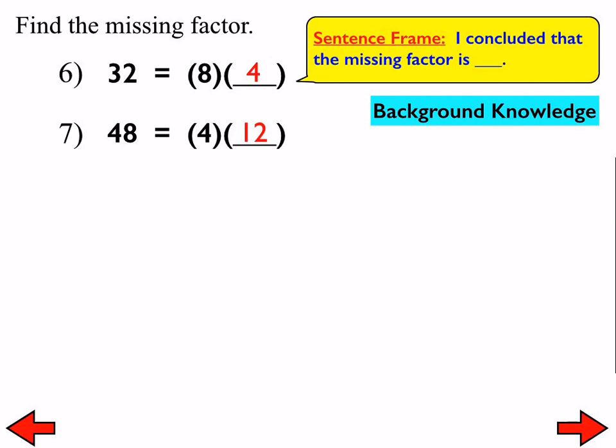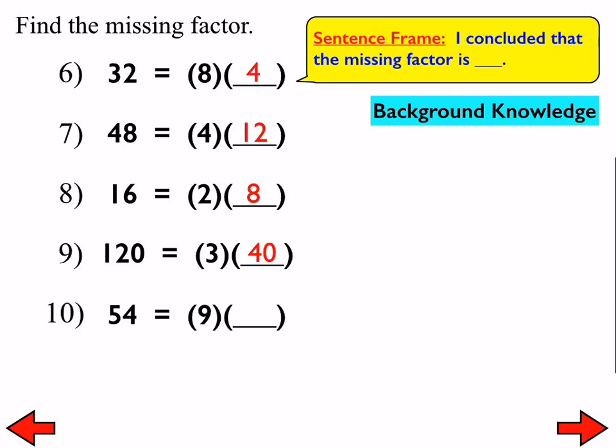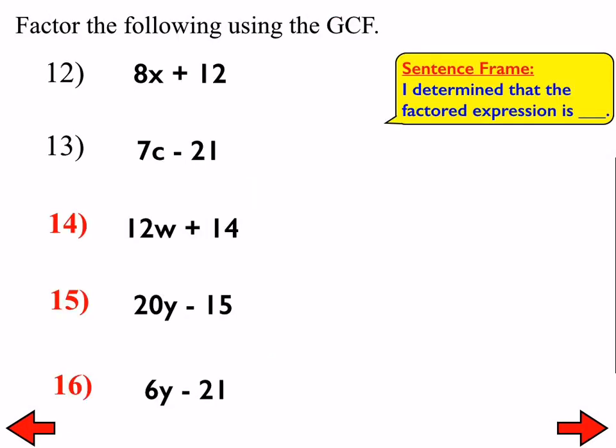And what we are really doing today is factoring something, so we're breaking it down into factors that will multiply together to make something else. So, obviously, in number 8, the missing factor is 8. In number 9, the missing factor is 40. In number 10, the missing factor is 6. In number 11, the missing factor is 11. 12 and 11 are factors of 132.